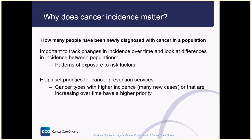So why is cancer incidence important? Tracking changes in incidence helps us set priorities for cancer prevention services. Cancer types with higher incidence, or that are increasing over time, generally have a higher priority. We can figure out which cancer types need to be a higher priority by tracking changes in incidence over time and looking at differences in incidence between populations. For example, if a type of cancer is much more common in one area than another, we'll need to investigate why — is it because of differences in exposure to risk factors, or something about the lifestyles or environments of a particular population?